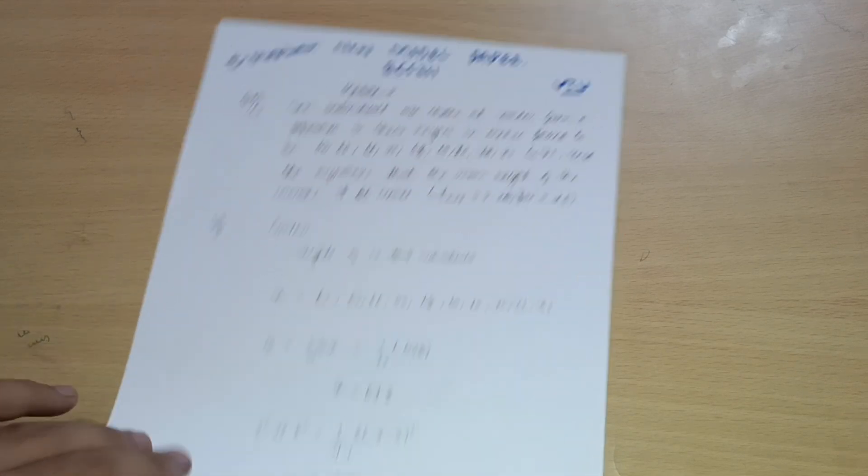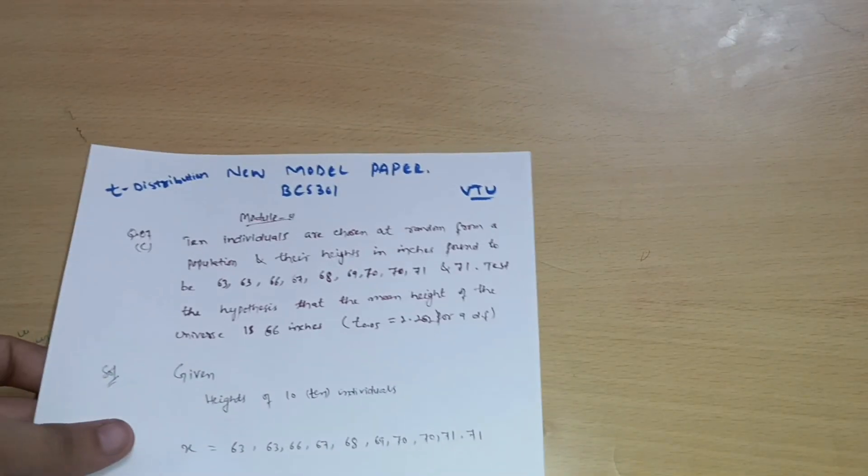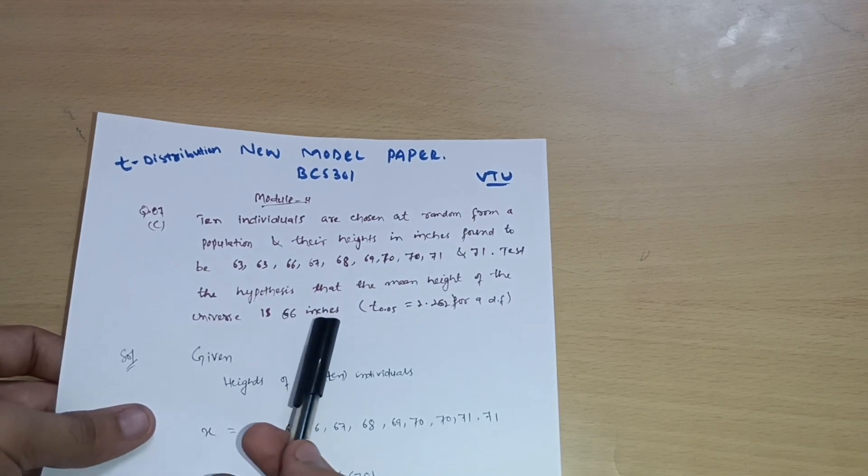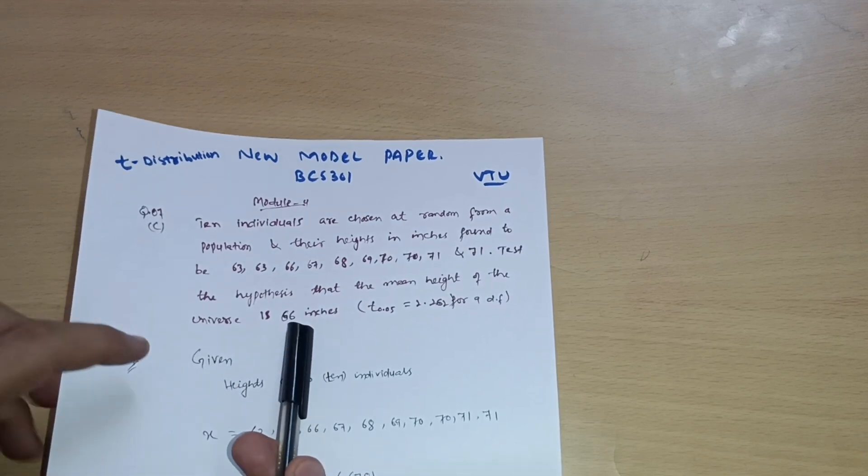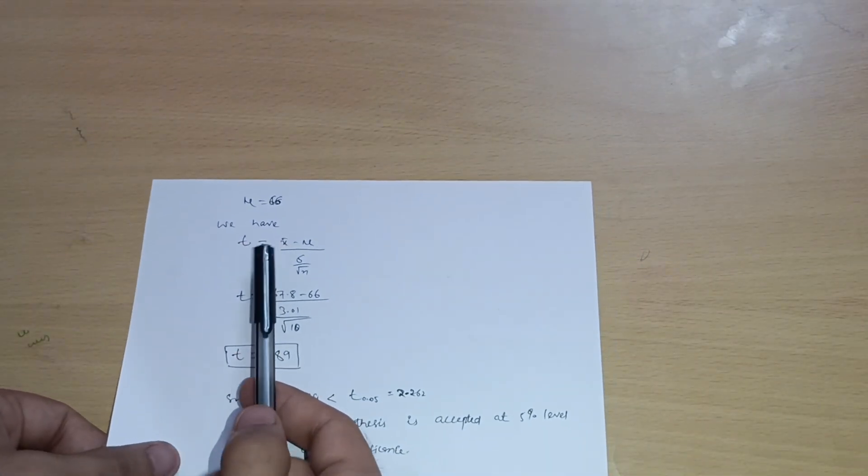Now we have mu is equal to 66. See here in the problem, the mean height of the universe is 66 inches, so we have to check the hypothesis. We have to take mu value as 66. So mu is equal to 66. We have the t-distribution formula, t is equal to x bar minus mu divided by sigma divided by root of n.